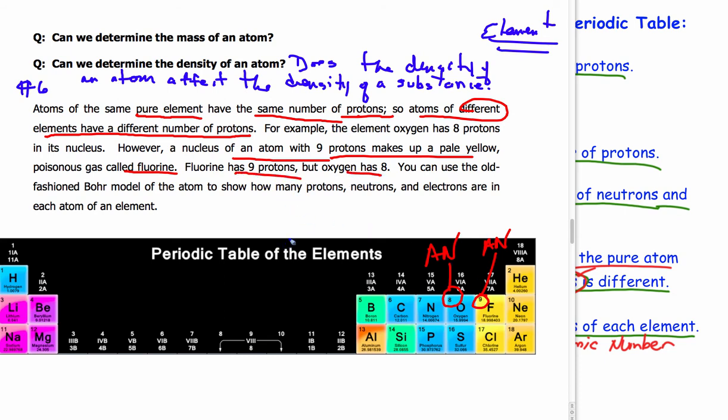You can use the old-fashioned Bohr model, and this is what you've seen a sketch of earlier, with the energy rings and the nucleus in the middle and the electrons in the electron cloud around. And we can show how many protons, neutrons, and electrons are in each atom of an element.